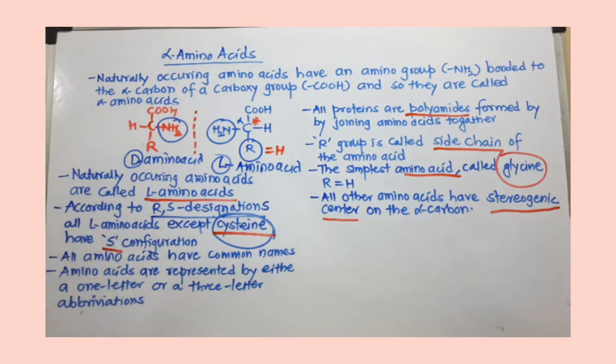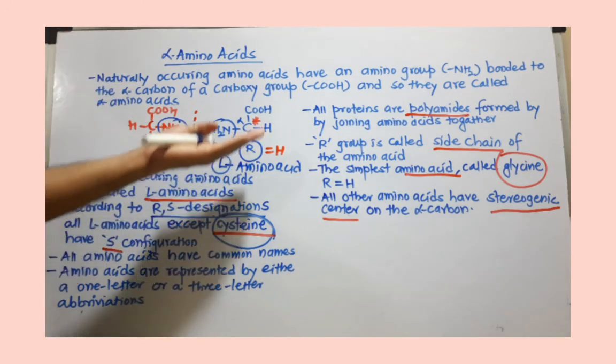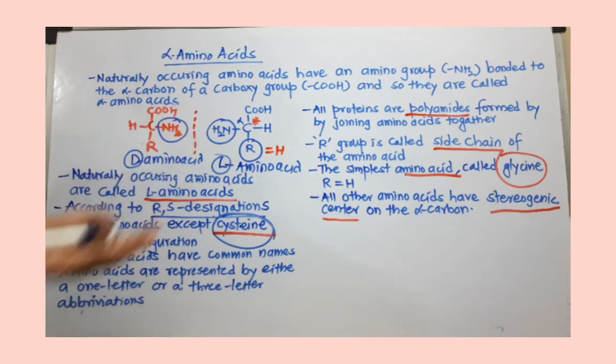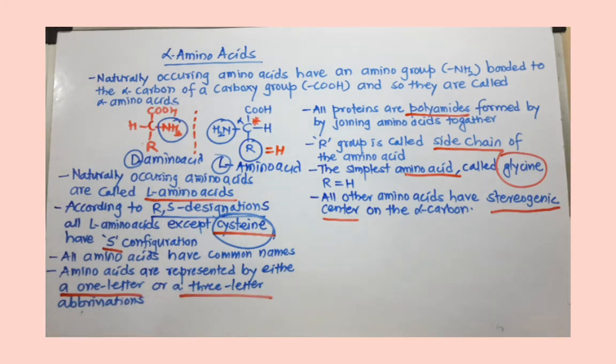All amino acids have common names, such as glycine, cysteine, and glutamic acid. These amino acids are represented by either a one-letter abbreviation or a three-letter abbreviation. These are the key points you should remember regarding amino acids.